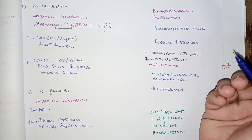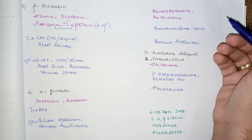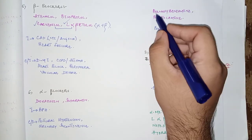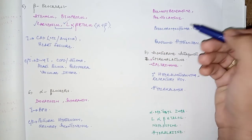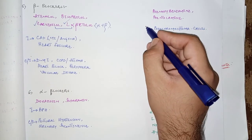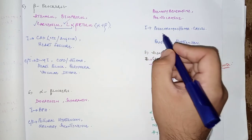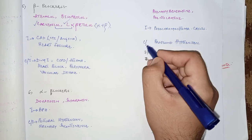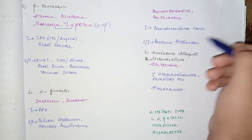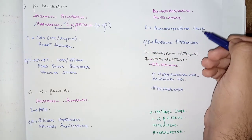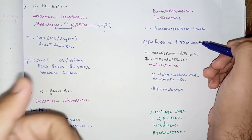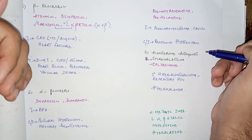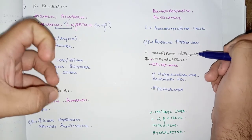Non-selective alpha blockers — alpha-1 plus alpha-2 blockers — include phenoxybenzamine and phentolamine. The indication for phenoxybenzamine is phaeochromocytoma crisis. The contraindication is profound hypotension, because these drugs' vasodilator effect can cause hypotension, so they should be avoided if the patient has already developed hypotension.